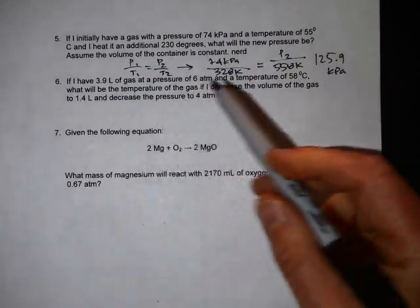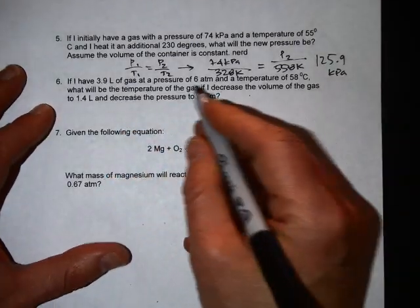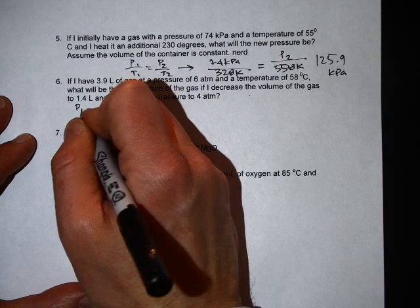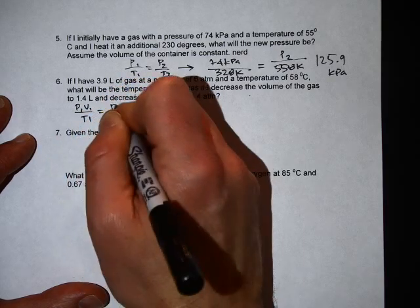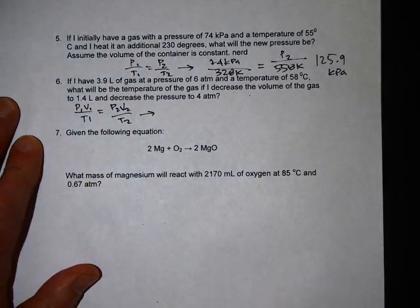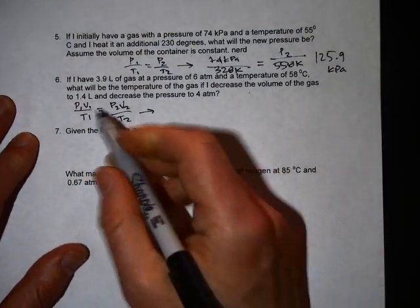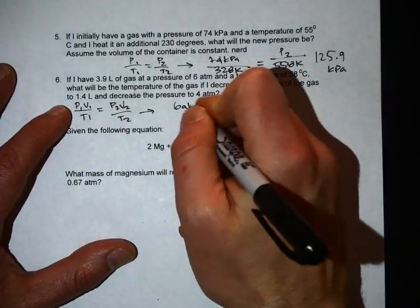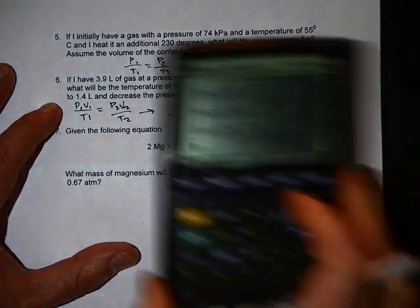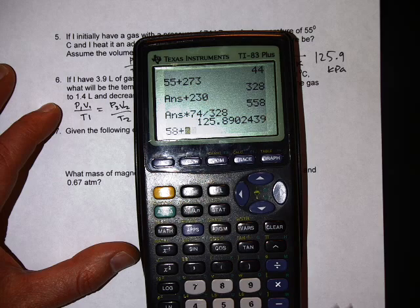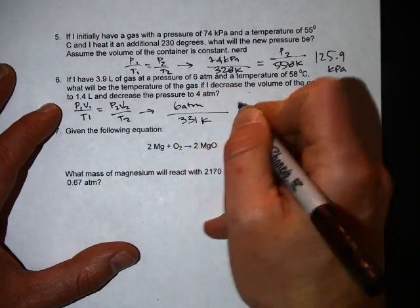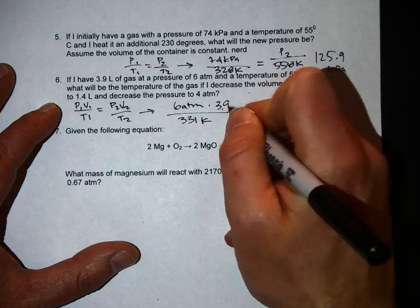Number six: got 3.9 liters of gas at a pressure, so this is going to be another combined gas law problem. And plug all the numbers in. The first pressure is 6 atm, the temperature is 58 plus 273, which is 331, the first volume is 3.9 liters.